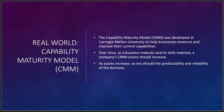The Capability Maturity Model helps businesses measure and improve their current capabilities. I've been working with this for almost 20 years. As a business matures and skills improve, a company's CMM scores should increase — but only if you're staying in the same product range. You may acquire a company or come up with a new product, so you'll have composite scores all over the place. As scores increase, so should the predictability and reliability of the business. Using data analytics can help you with your CMM — there's nothing better for the cloud than a good data analytics package to process the sheer volume of data coming in.